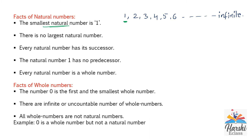There is no largest natural number because they are infinite. Every natural number has its successor — the successor is the 'after number,' found by adding 1. For example, the successor of 1 is 2, the successor of 2 is 3, and so on. Regarding predecessor: natural numbers have predecessors, but with one exception — the natural number 1 has no predecessor because natural numbers start from 1, so there are no numbers before 1.